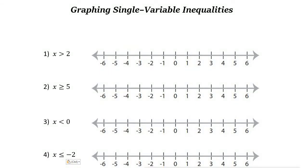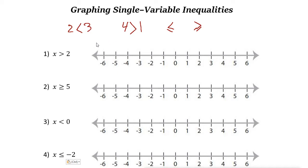Graphing single variable inequalities. An inequality compares two expressions using an inequality sign. We have different inequality signs — for example, less than (2 less than 3), greater than (4 greater than 1), and also less than or equal to or greater than or equal to. To graph these inequalities, the variable should be alone on one side: x is less than, greater than, less than or equal to, or greater than or equal to a value.